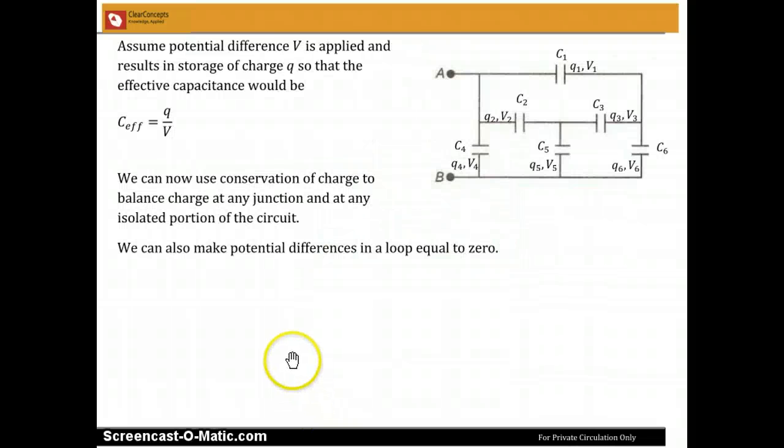So one way we could go about it is assume some potential difference exists between A and B, and that it results in a storage of some charge Q. So then we will be able to say that the effective capacitance C_eff is Q by V. So how do we get to that?